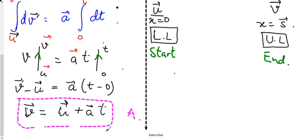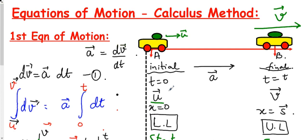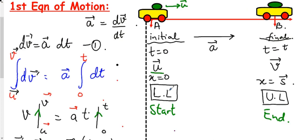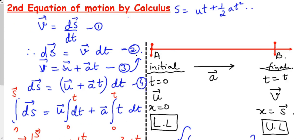Therefore, v (vector) = u (vector) + at. This is what we wanted to derive — the first equation of motion. Please pause the video, write this in your copy, and then proceed to the next.